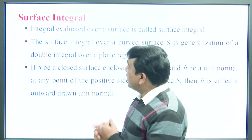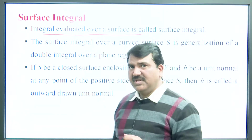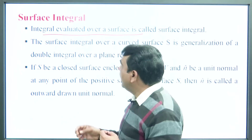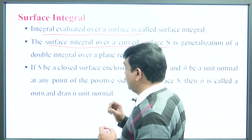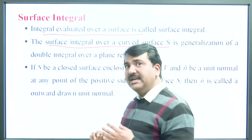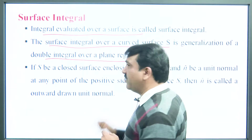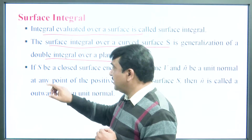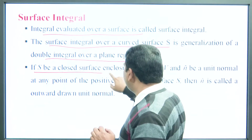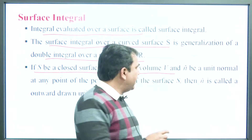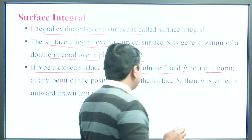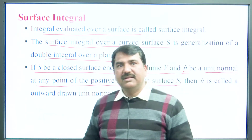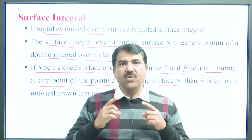Now, surface integral: any integral evaluated over a surface is called a surface integral. The surface integral over a curved surface S is the generalization of a double integral over a plane region R. If S is a closed surface enclosing a volume V, and N-hat is the unit normal vector at any point on the positive side of S, then N is called the outward drawn unit normal.